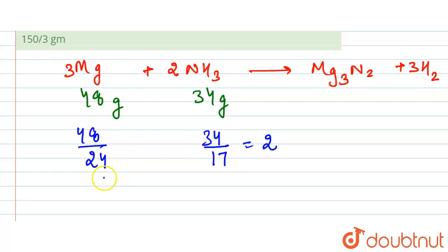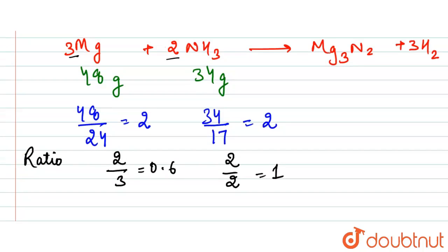Now here what we have is our coefficients are different, so we will take the ratio of the moles to the coefficient. So here we have 2 upon 3, here we have 2 upon 2. Here it is 0.6, here it is 1. So here our limiting reagent is the magnesium.